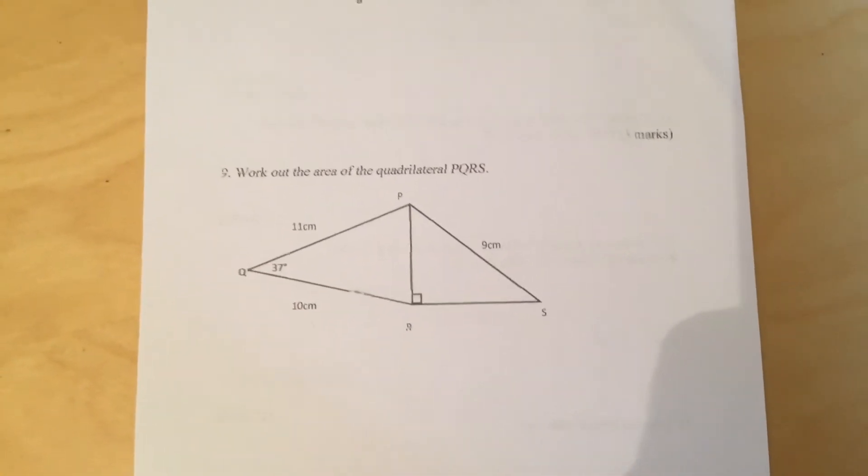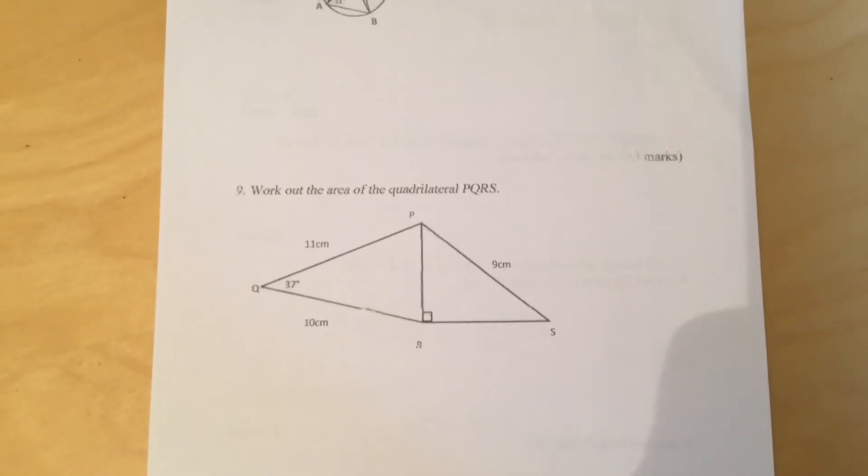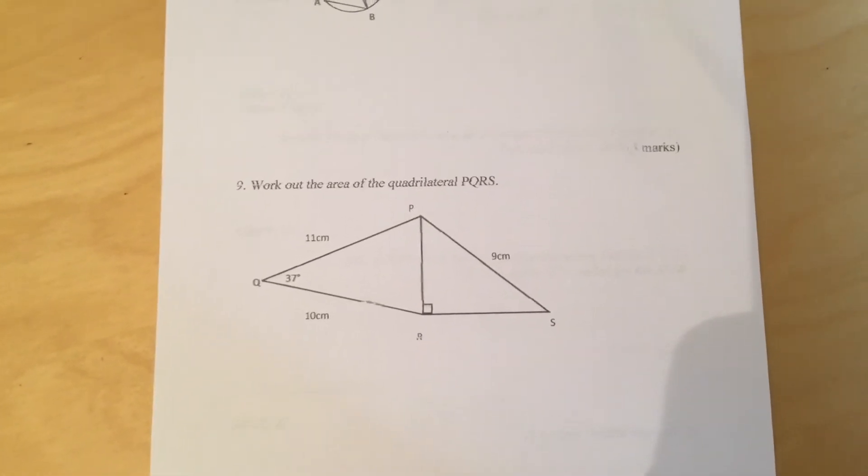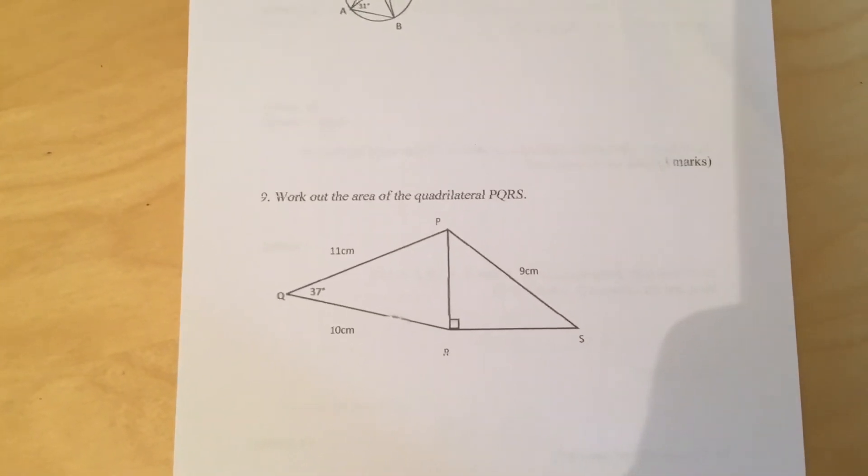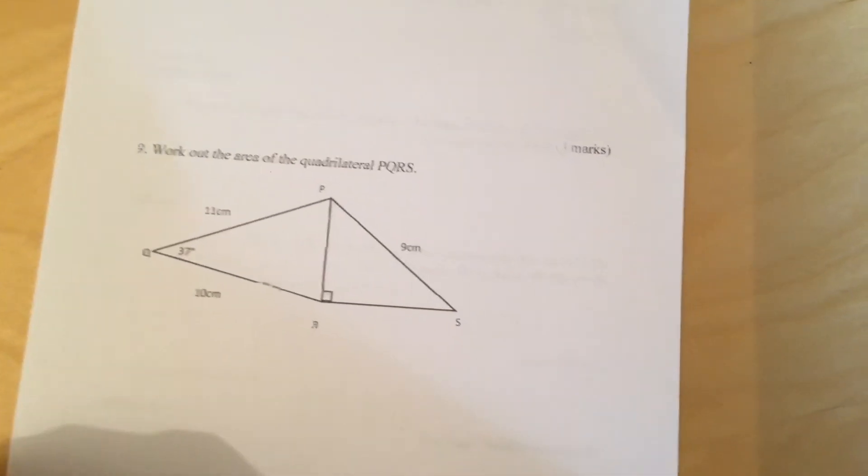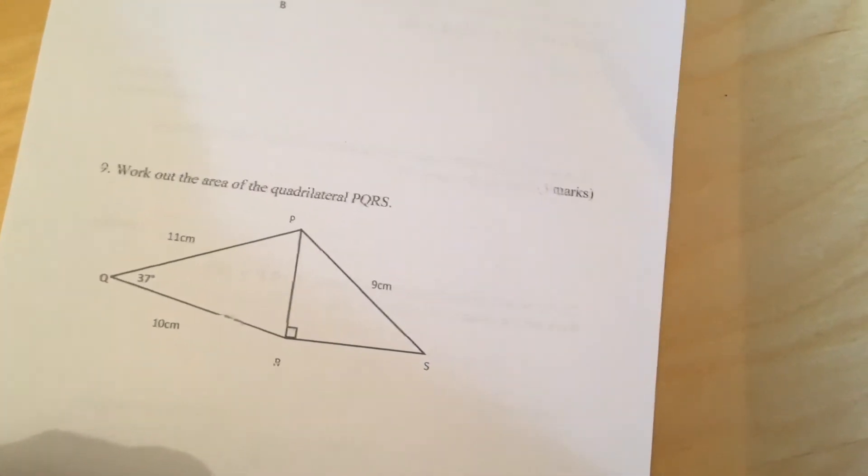Question 9. Work out the area of the quadrilateral PQRS. You can see the quadrilateral is made from two triangles, and the triangle PRS is a right-angled triangle. The other one is a normal triangle. That's question 9.